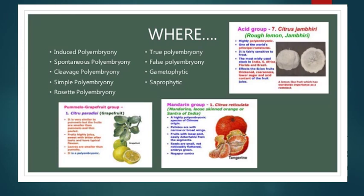In true polyembryony, there are two or more embryos arising in the same embryo sac from the zygote — for example, in the citrus plant. In false polyembryony, the development of embryos occurs in more than one embryo sac within the same ovule or placenta — for example, in the Loranthaceae family.